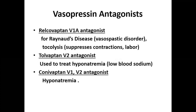Vasopressin antagonist examples include relcovaptan, a V1A antagonist used for Raynaud's disease, vasospastic disorders, and tocolysis — suppression of contractions in labor to save the baby's life. Tolvaptan is a V2 antagonist used to treat hyponatremia; whenever there is a reduction in sodium level, V2 antagonists are used to increase sodium in the patient's blood. Conivaptan is a V1/V2 antagonist also used in hyponatremia.